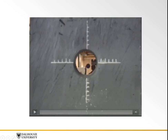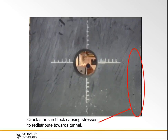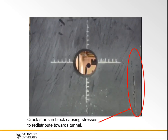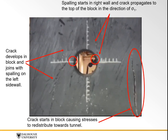As the block is initially being loaded, a crack starts to begin in the lower right corner of the test block. Following this, the stresses show a drop since the block failed, but that leads to the stresses redistributing towards the excavation. From this redistribution, spalling begins in the right sidewall, and a crack propagates to the top of the block in the direction of the major principal stress. A crack is also developed on the left side of the block and curves to join with the spalling occurring on the left sidewall. The spalling intensifies on both the right and left sides of the tunnel until complete failure happens on the right side of the block and the press is stopped.